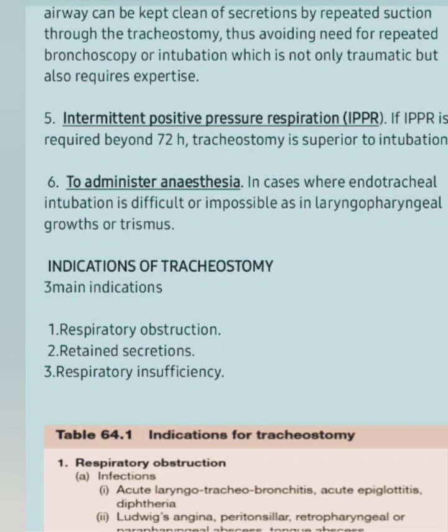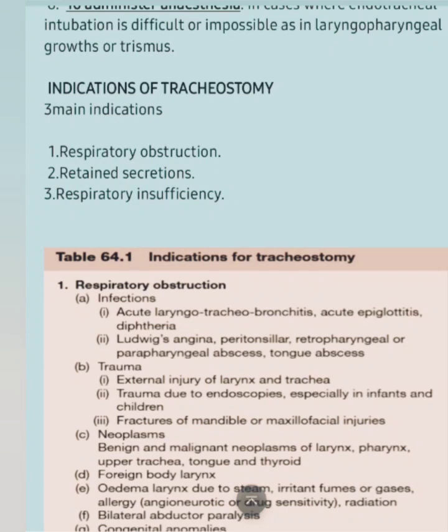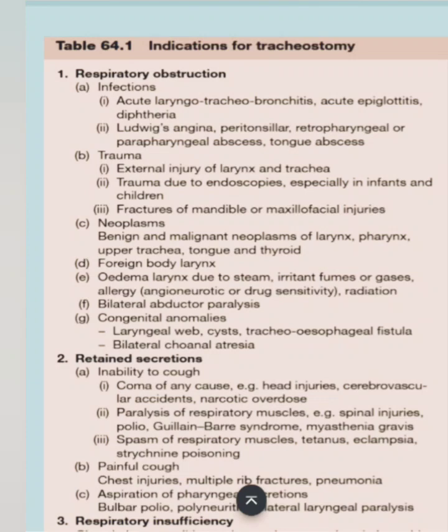The sixth function is to administer anesthesia. In cases where endotracheal intubation is difficult or impossible, such as in laryngopharyngeal growth or trismus, anesthesia can be administered through the tracheostomy. Now we will see the indications of tracheostomy. There are three main indications: respiratory obstruction, retained secretions, and respiratory insufficiency.